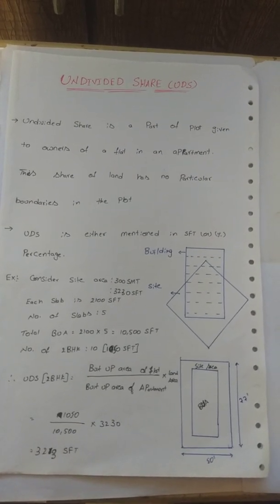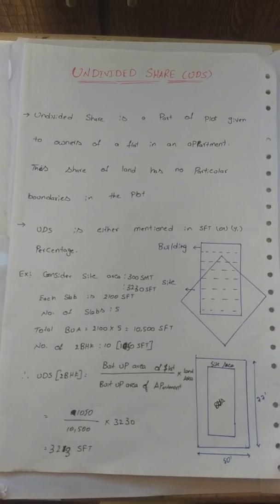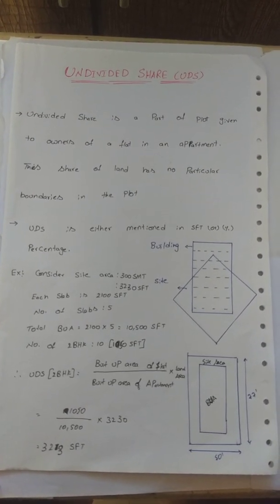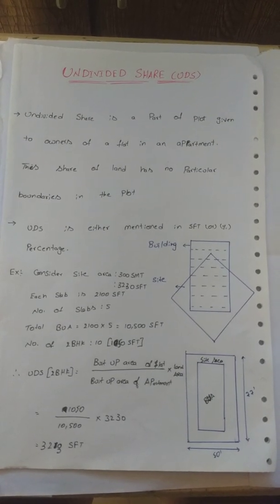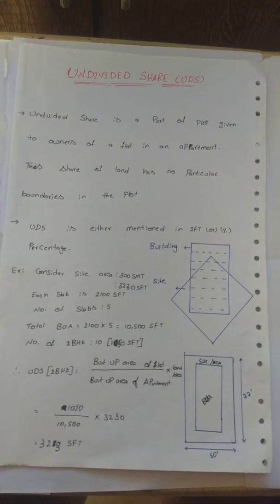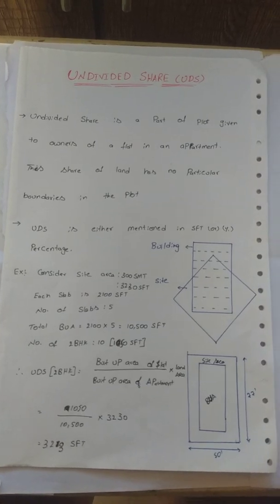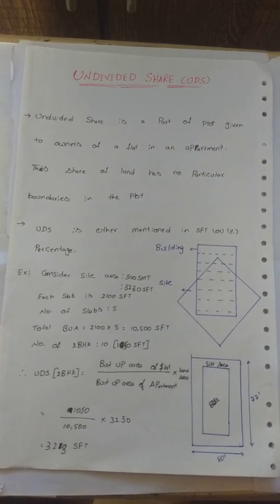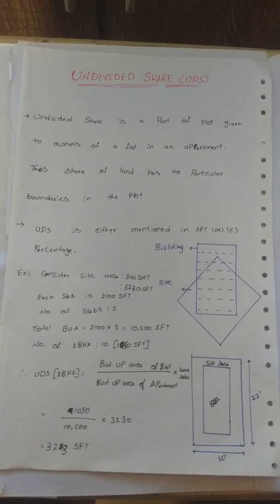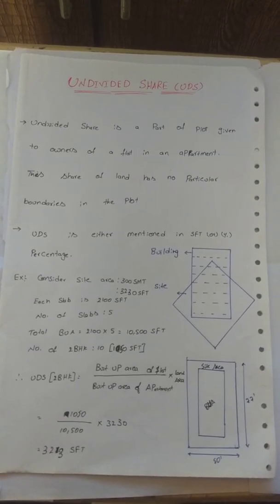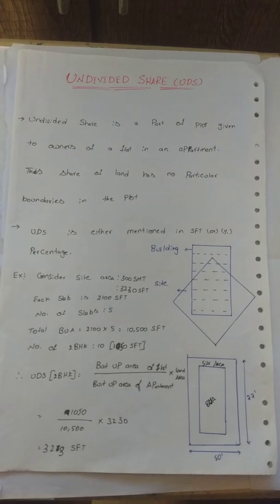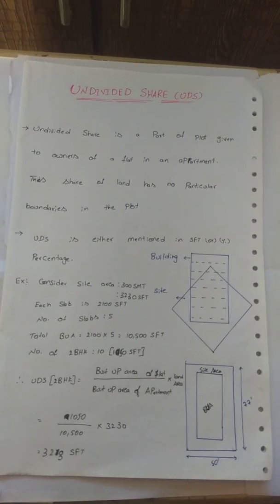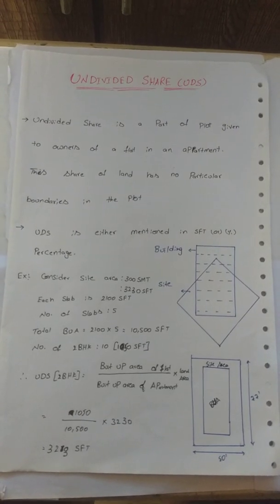When we purchase apartments and document, the details include flat area of Undivided Share. For example, in this total apartment, some part of land is allocated to owners of a flat in an apartment. This share of land has no permanent boundaries in the plot. This is a physical form. We will measure in square feet and percentage.